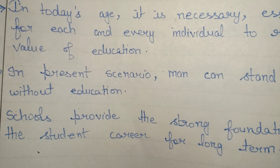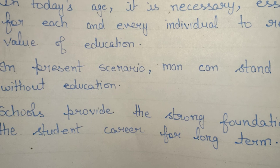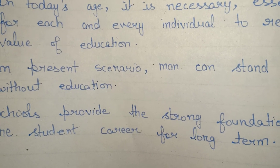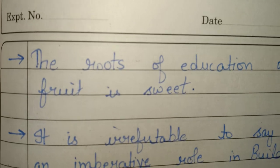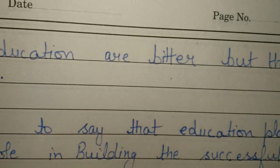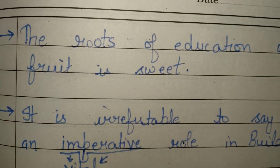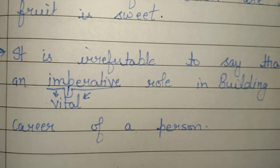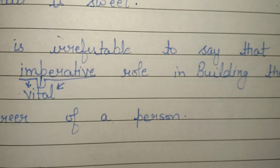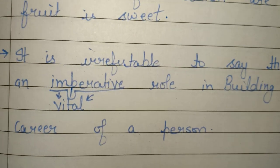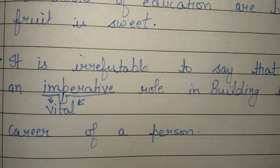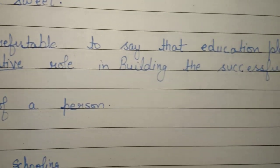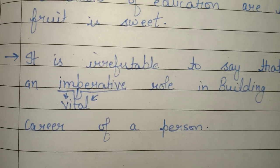Note: it is 'career,' not 'carrier' — there is a huge difference between a career and a carrier, and many students make this mistake. The next hook line is: 'The roots of education are bitter but the fruit is sweet.' And: 'It is irrefutable to say that education plays an imperative role in building the successful career of a person.' Here, imperative means vital, important, or crucial.